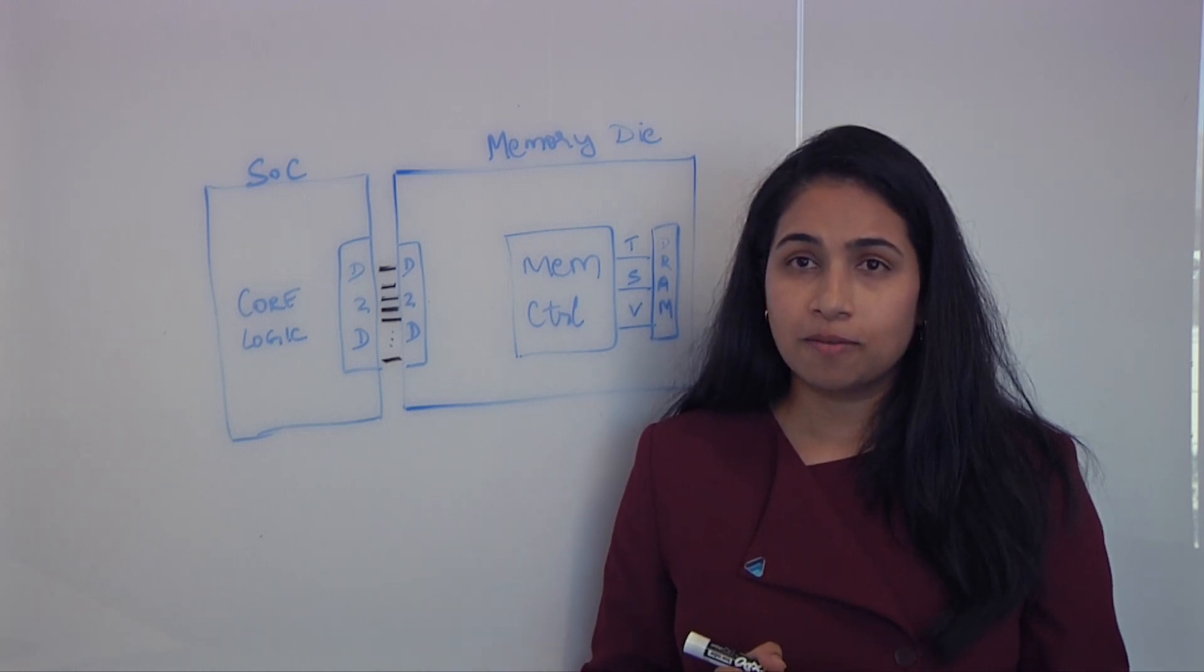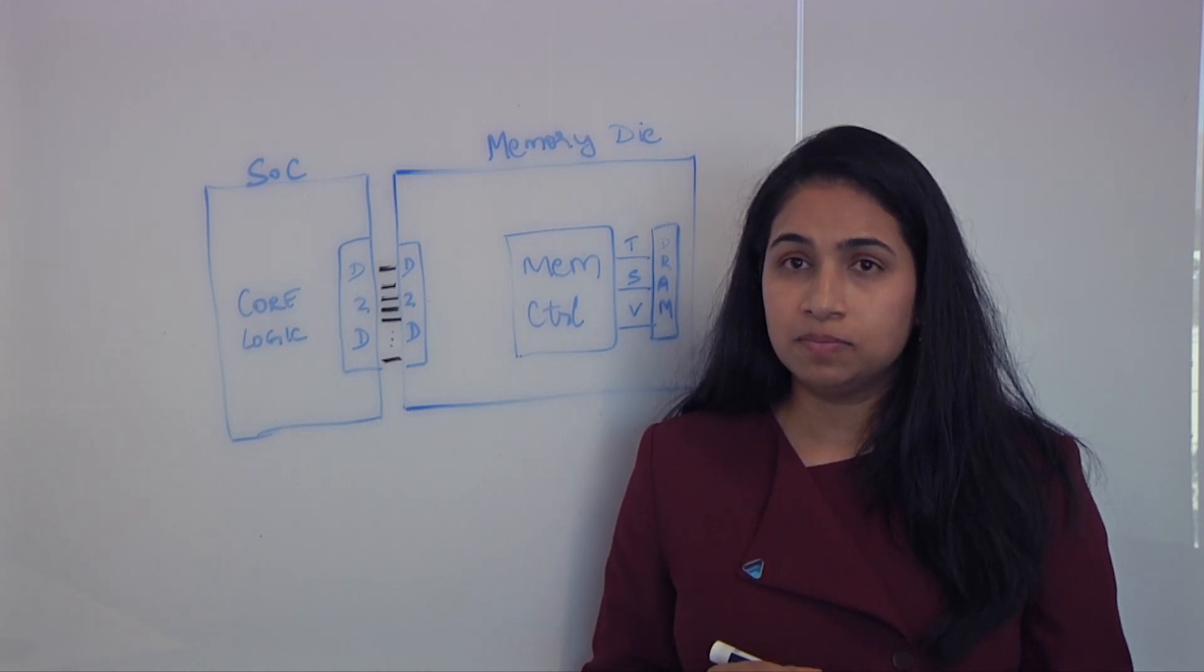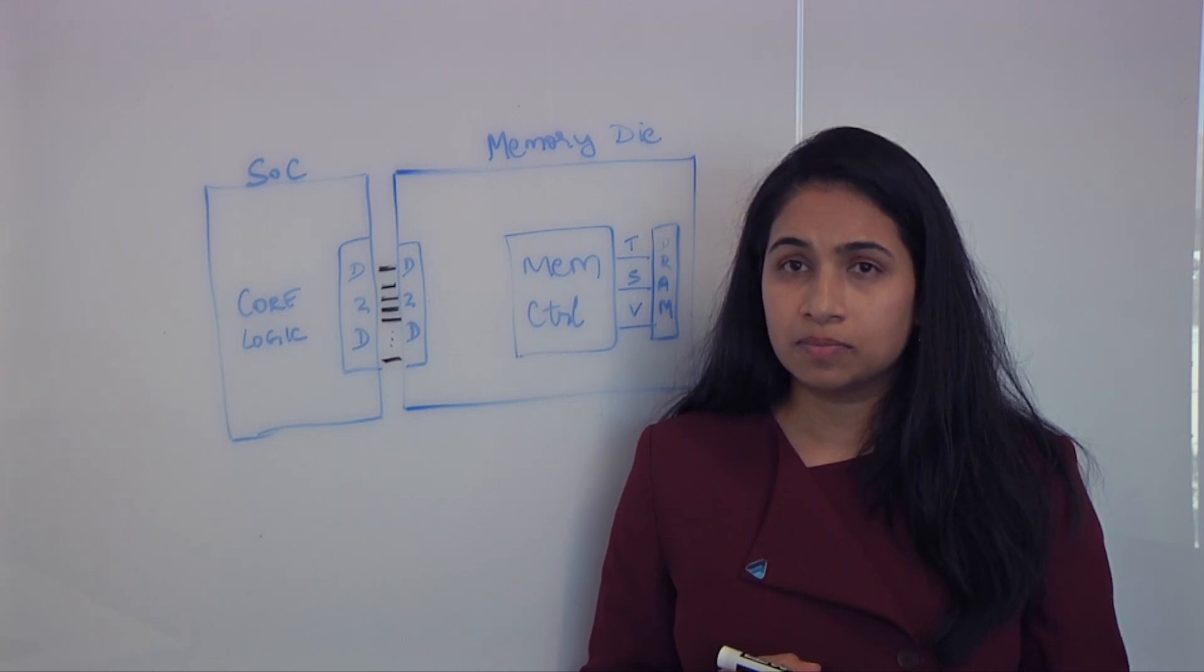You've got a couple other elements in here that are really challenging too. So you've got a lot more data. You've got more stacks of DRAM, which is basically what HBM is. And now you have to move some of this data very fast to wherever you're going to be using it for processing and then back again to storage. How do you do that?